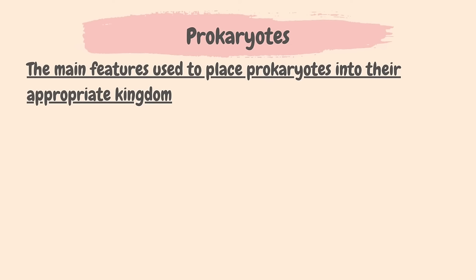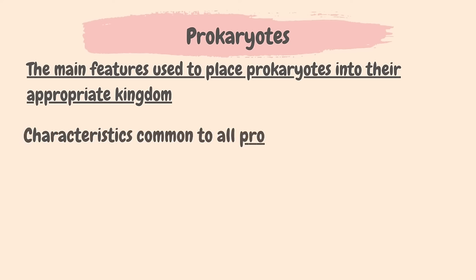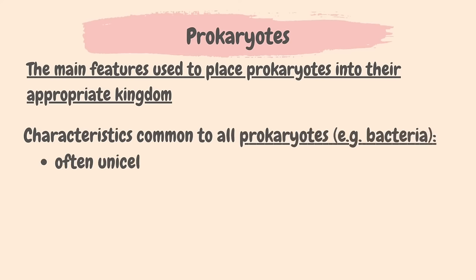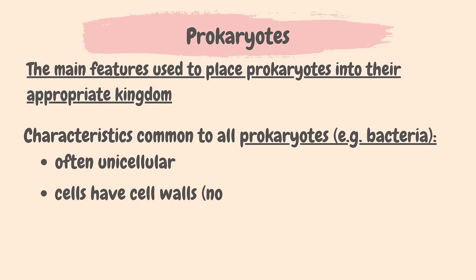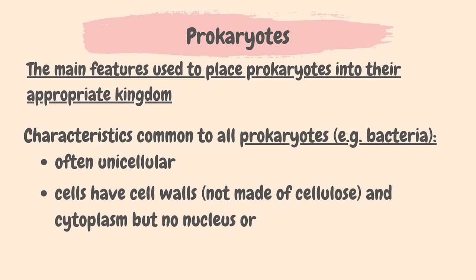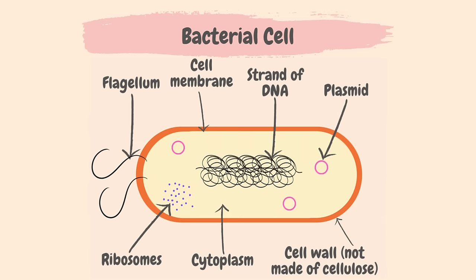The final kingdom is prokaryote. Bacteria is an example of prokaryotes. The main features of all prokaryotes are: they are often unicellular; their cells have cell walls that are not made of cellulose and cytoplasm, but no nucleus or mitochondria. Here's an illustration of a typical bacterial cell — a bacterial cell doesn't have a nucleus; instead, it has strands of DNA and plasmids.